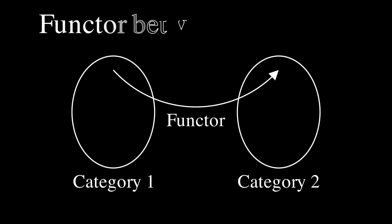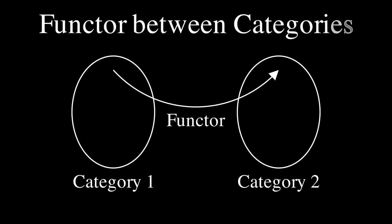And there are also functors, which are maps or arrows that link one category to another category. This can be very interesting, because sometimes you can have a problem in one category that is very difficult to solve. And when you move it to another category, it becomes clearer.